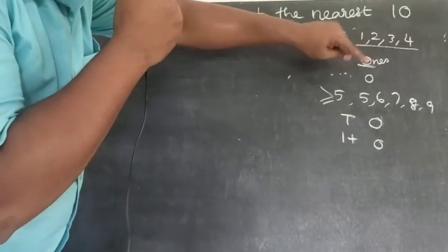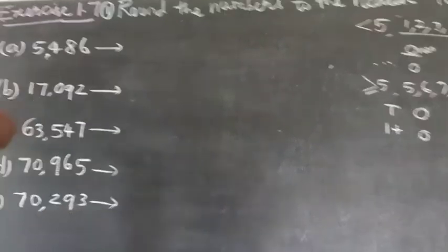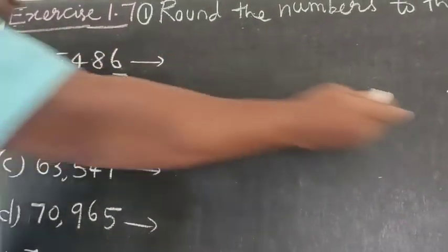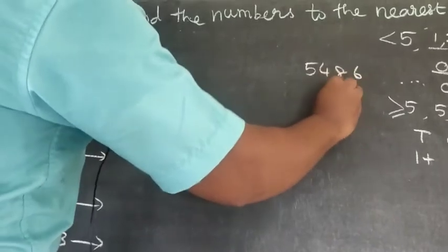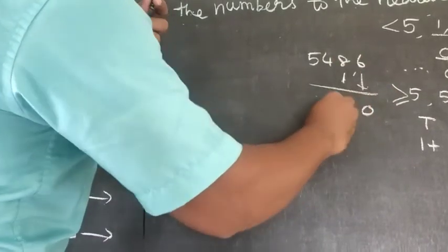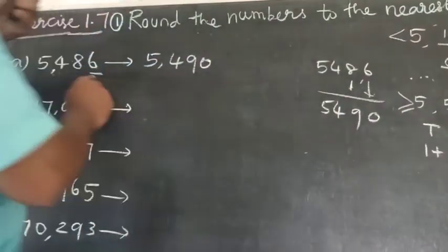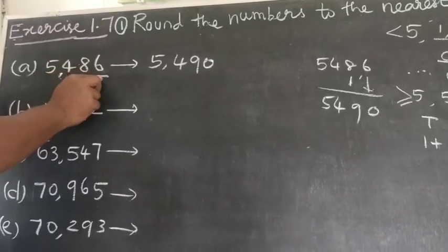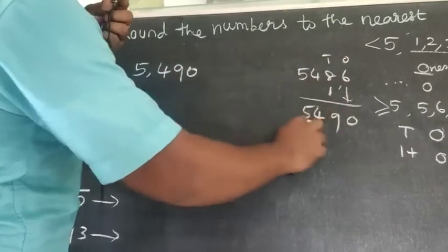Question A: 5,486. The last digit is six, which is greater than five. So the last digit becomes zero and we add one to the tens place. 8 plus 1 equals 9, giving us 5,490. That is the answer: 5,490.